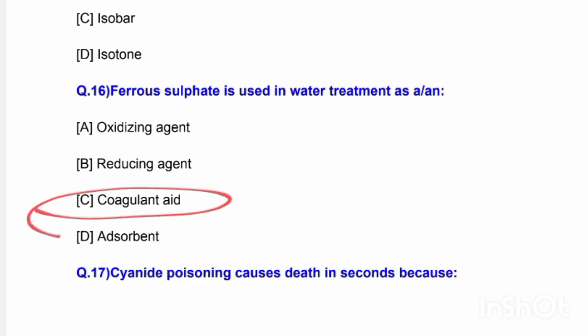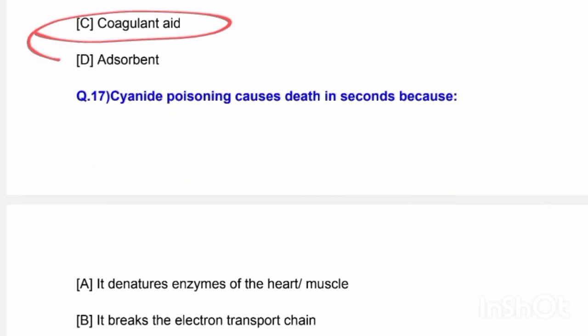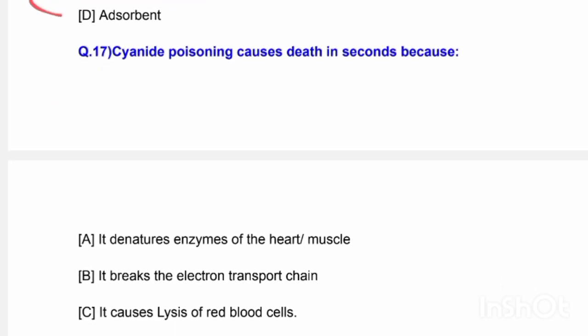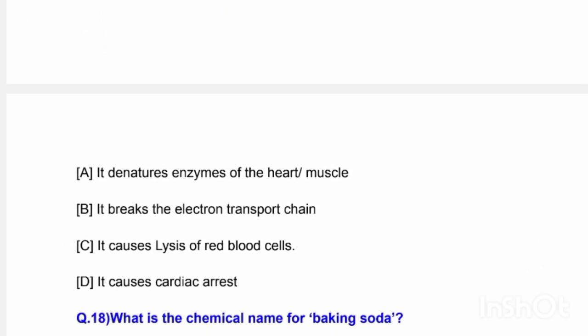Next question: Cyanide poisoning causes death in seconds because — options are: it denatures enzymes of the heart muscles; it breaks the electron transport chain; it causes lysis of red blood cells; or it causes cardiac arrest. The correct answer is option D — cyanide poisoning causes cardiac arrest.